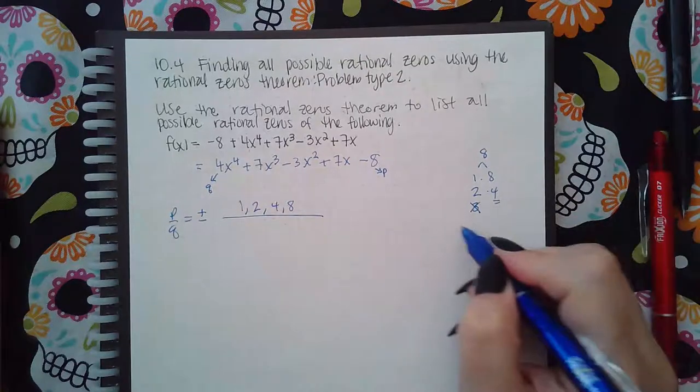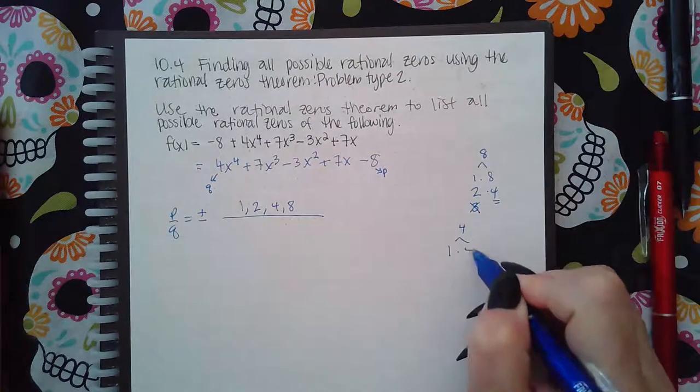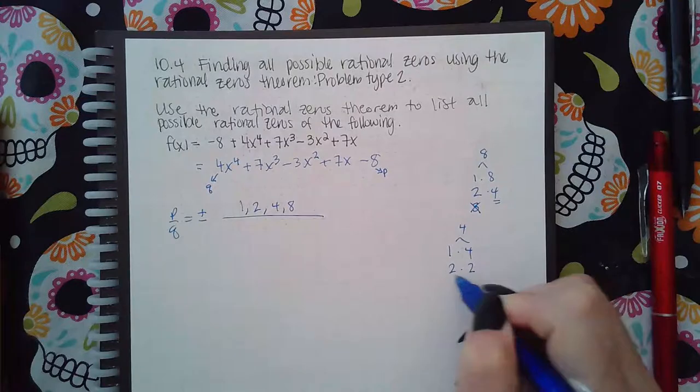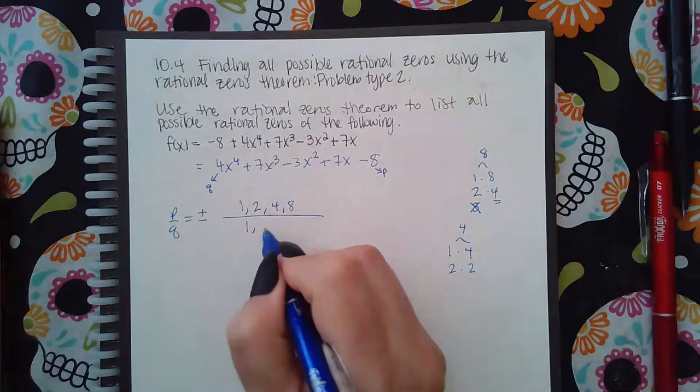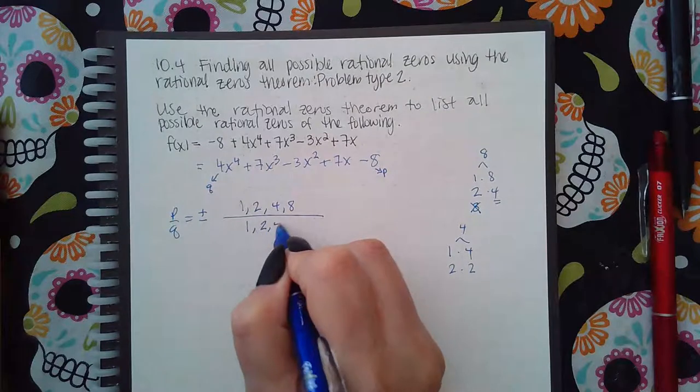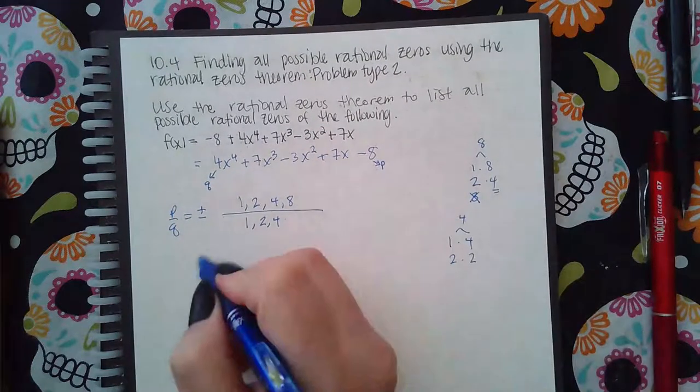For 4 the numbers are going to be 1 times 4 and 2 times 2 and you already have a number that repeats so you know you can stop. So the numbers we get are 1, 2, and 4. Now we do the combinations.